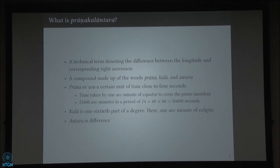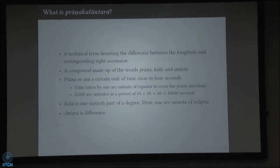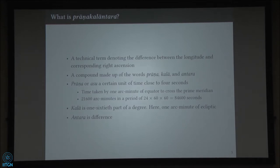Prana is basically close to four seconds. If you consider that the time period of the rotation of the earth is approximately 84,600 seconds, and 21,600 arc minutes is the standard measure of the circle in Indian astronomy, then 84,600 divided by 21,600 gives approximately four seconds. So it is the time taken by one arc minute of the equator to cross the prime meridian.